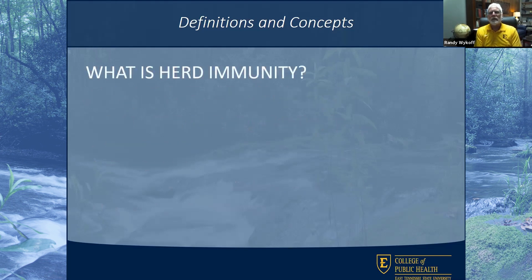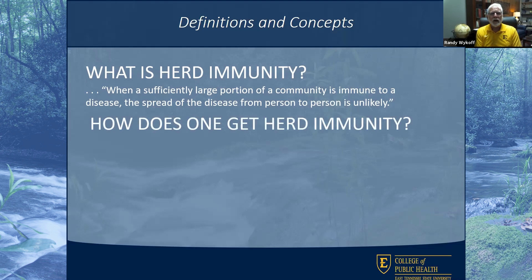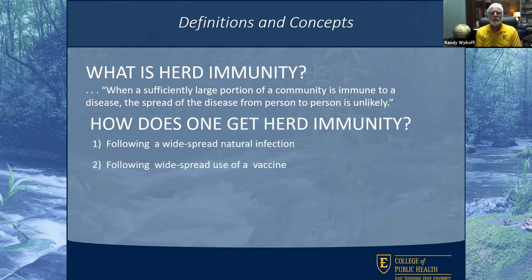Herd immunity is the idea that a sufficiently large portion of a community is immune — can't get infected — and that prevents person-to-person spread of that disease. One achieves herd immunity through widespread natural infection or widespread use of a vaccine.